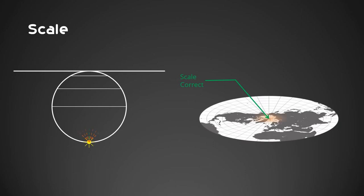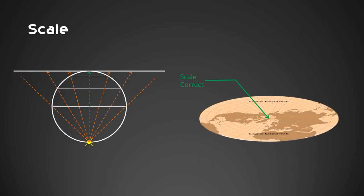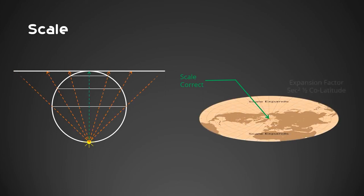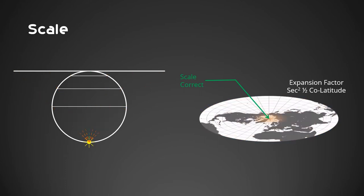Scale. Based on the light path simulation in the diagram on the left, for polar stereographic charts, scale is correct at the pole where the paper touches the reduced earth. Elsewhere, the scale expands. The expansion factor is secant squared half co-latitude. The learning objective does not require you to memorize the expansion factor of polar stereographic projection.